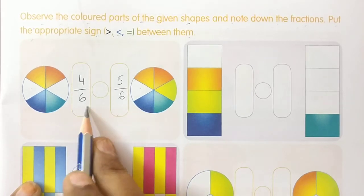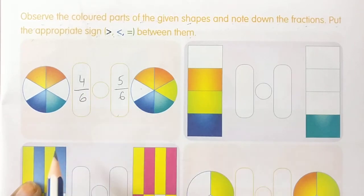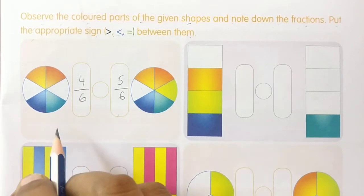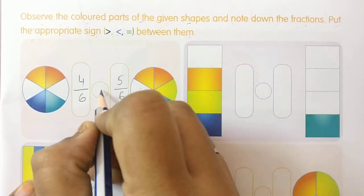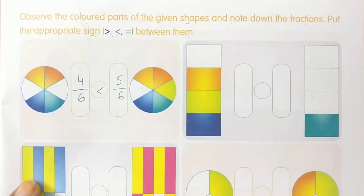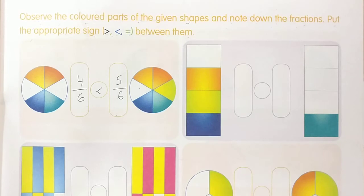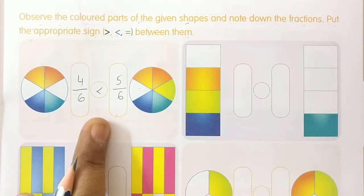Now see the numerators. The numerator numbers are 4 and 5. So which is the greatest number? 5 is the greatest number, so 5 by 6 is the greatest. Therefore 4 by 6 is less than 5 by 6.